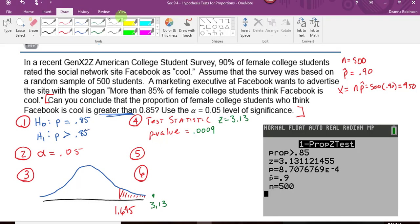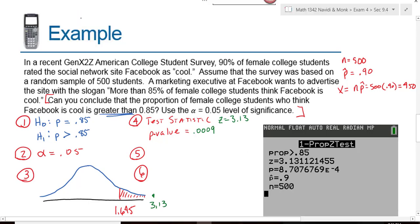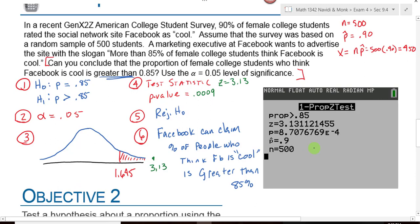Based on that, would I reject or fail to reject the null hypothesis? Now I rejected this null hypothesis, which means I proved the alternative. So can Facebook say that the percentage of people that think Facebook is cool is greater than 85%? Yes. See how that works?